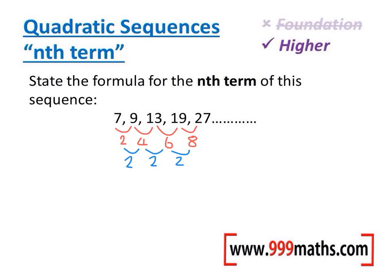What we do then is we half this number. So half of 2 is 1, and that tells me it's going to be 1n squared, or just n squared. If that number was 4 we'd half it and we'd get 2n squared.